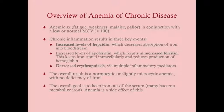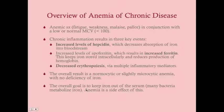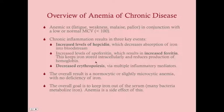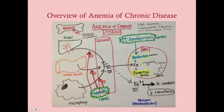Anemia is really a side effect of this evolutionary process. Evolution intended to keep iron away from bacteria, not from hemoglobin — but you get anemia because ferritin hogs the iron and prevents hemoglobin production. To summarize: increased hepcidin decreases iron absorption, increased ferritin hogs iron away from heme, and decreased erythropoiesis reduces red blood cell production.